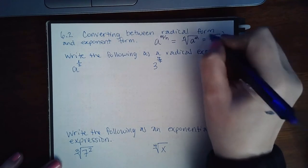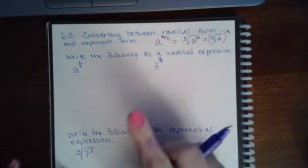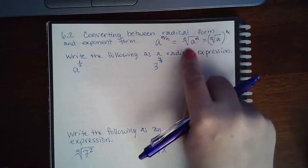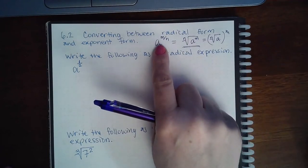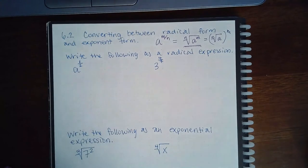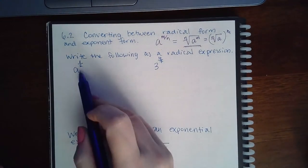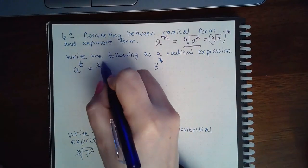Now for this section all they want us to do is put it in radical form, so we're actually going to be using this version when we convert it from this exponent form to the radical form. So for these, that means the bottom is going to be my index and then the numerator is going to be my exponent.